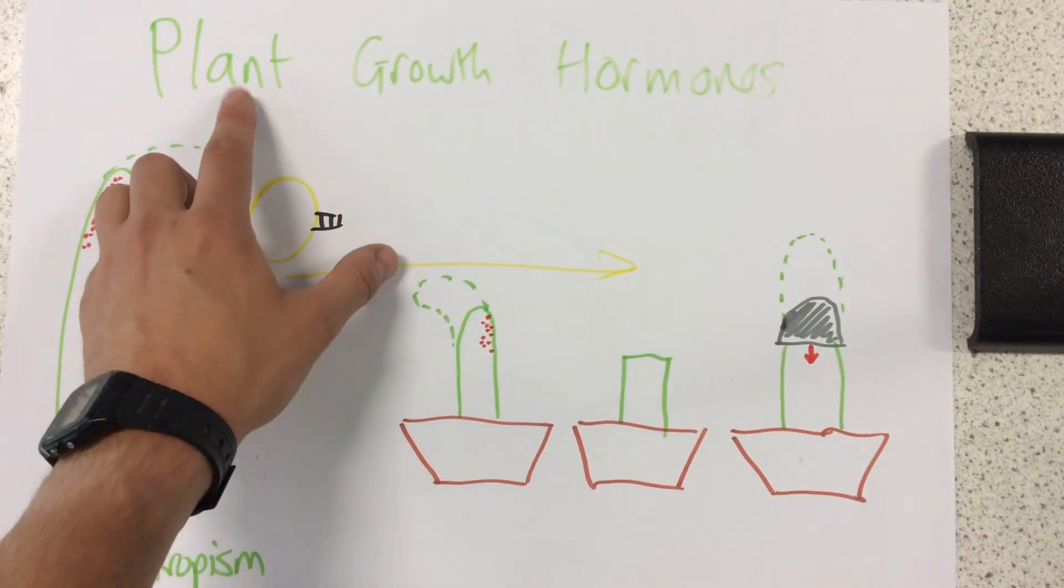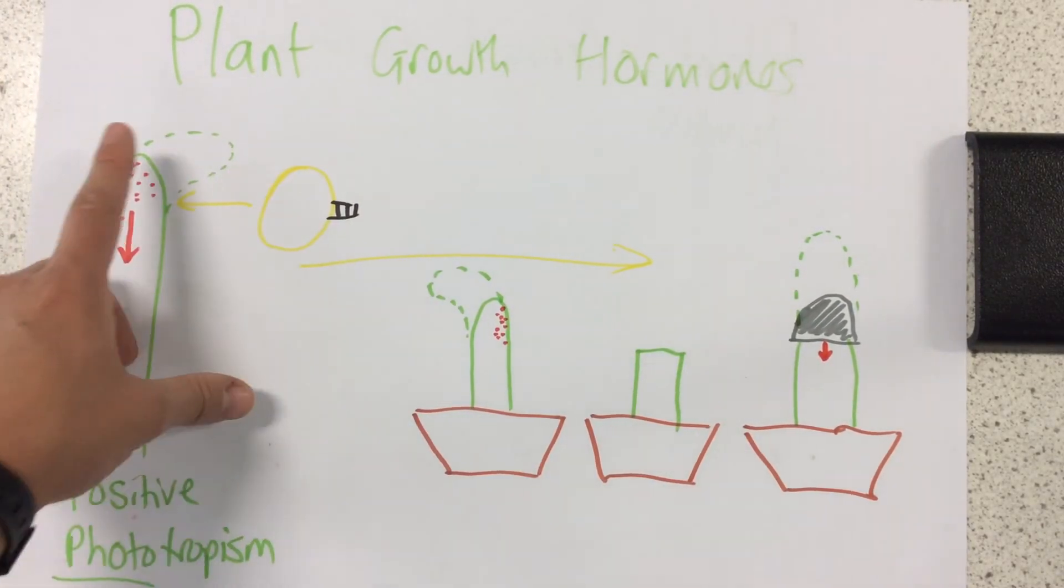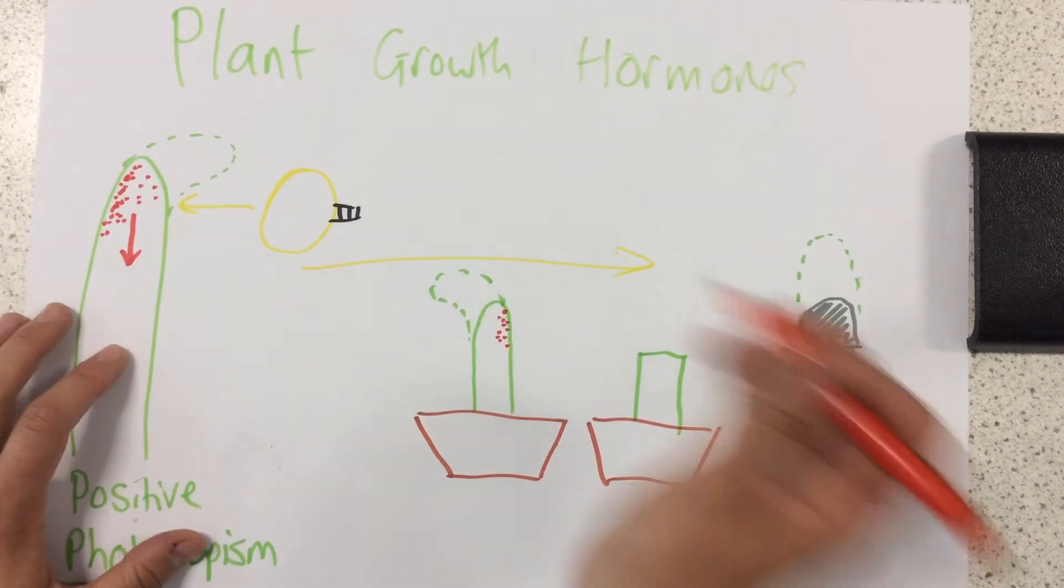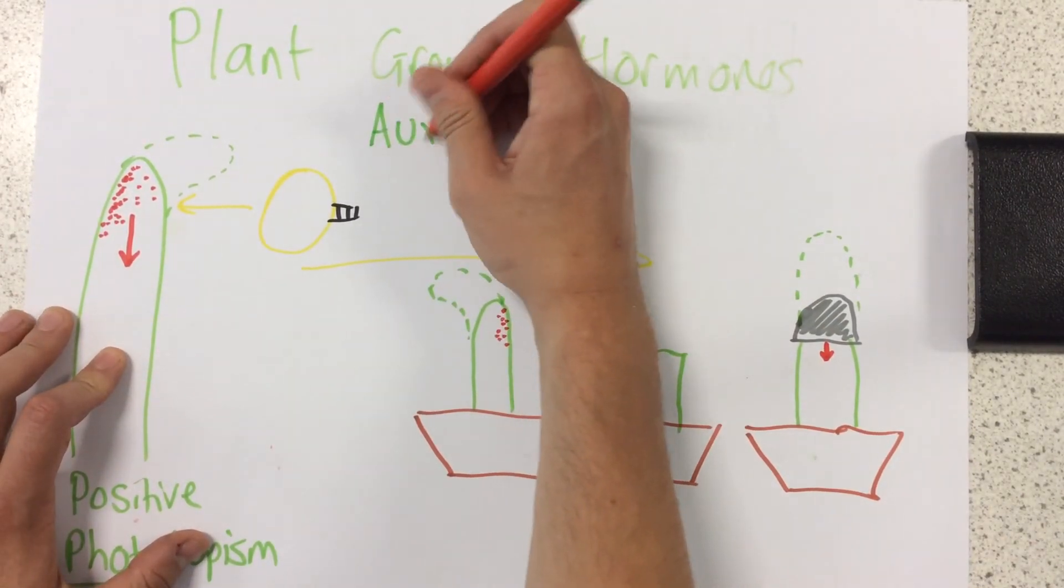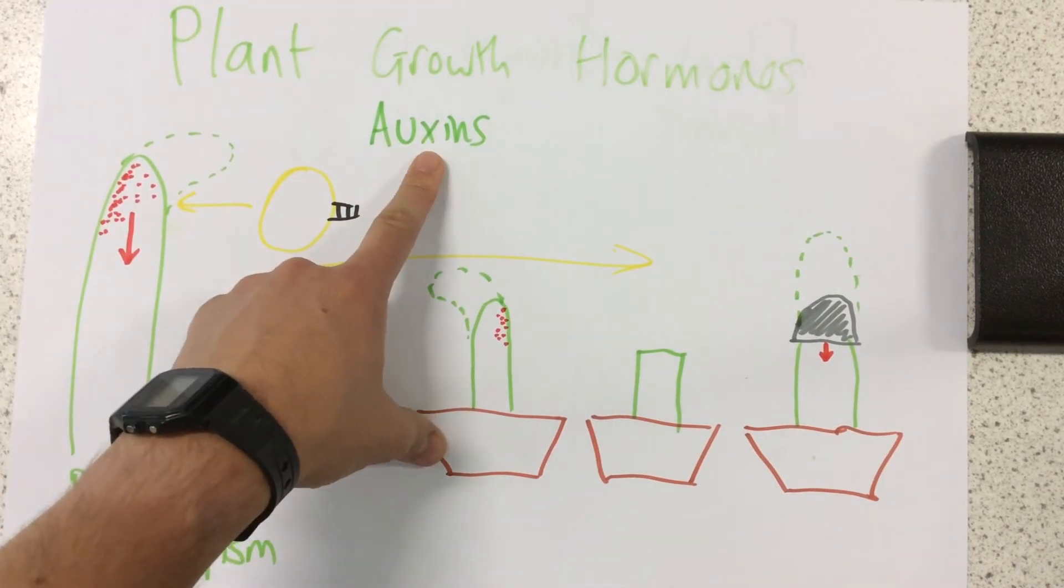So just to recap, plant growth hormones help plants to grow. The specific name of them, I haven't even written it down yet, actually, is auxins. That's the name of the plant growth hormone.